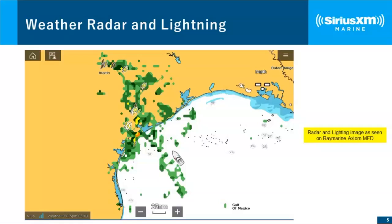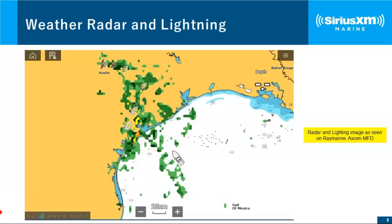As a recommendation for everybody joining tonight, especially for offshore anglers and cruisers, we recommend zooming out to get situational awareness of your surroundings in a broader perspective. You can see at the bottom of the screen, this is a 25 nautical mile zoom area. If you zoomed out to 100 or 200 miles, you get a much broader perspective of what's going on with radar around you.